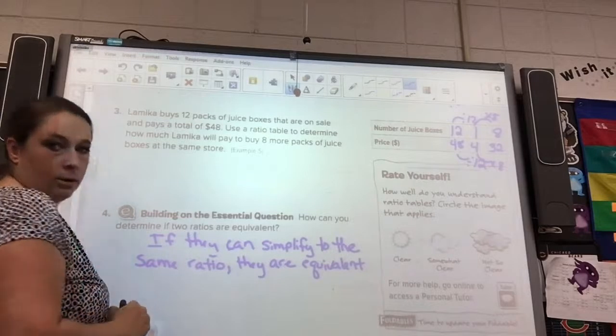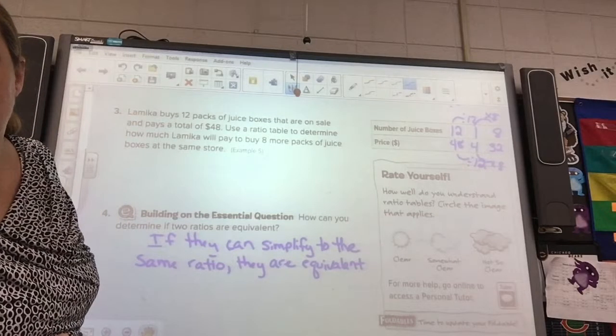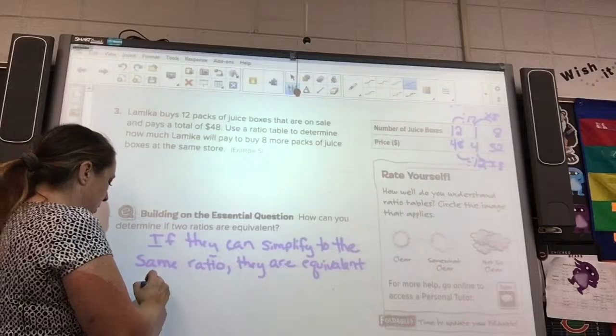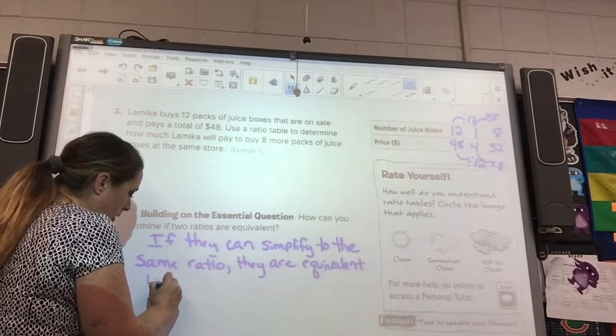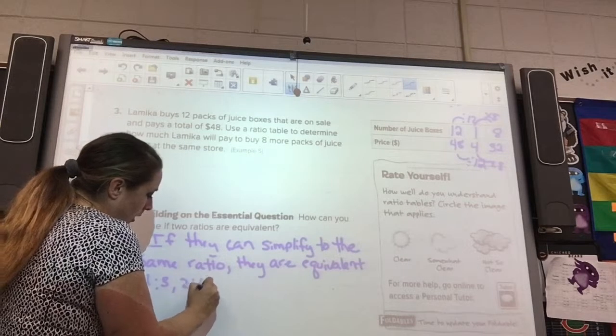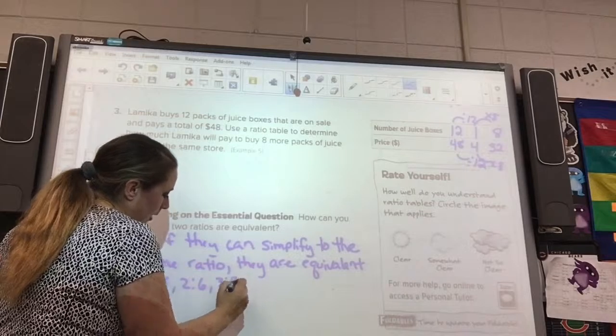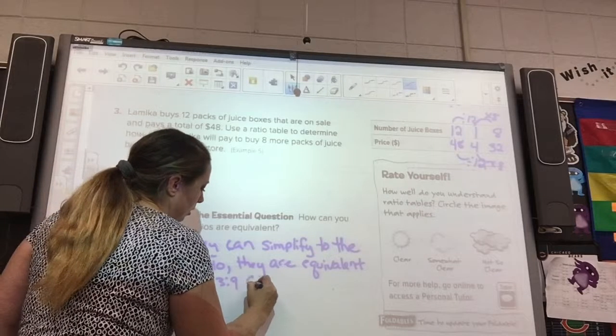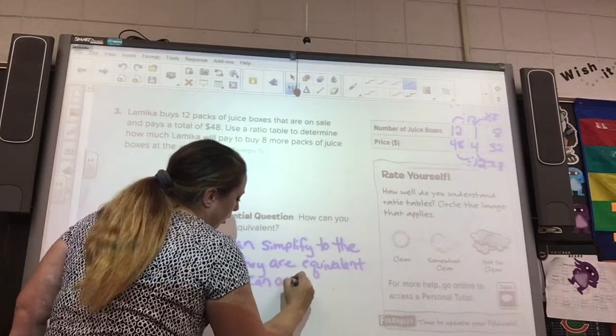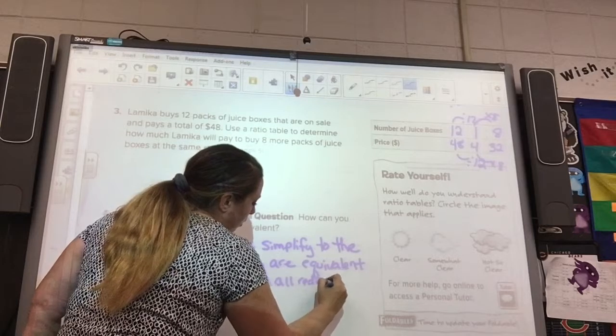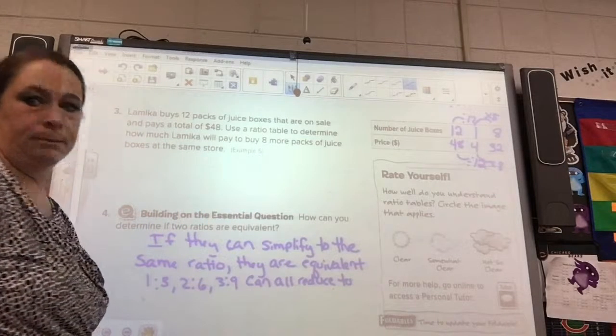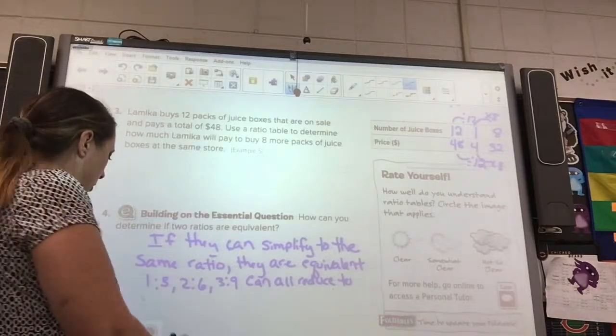So we have, what example they gave us, they gave us 1 third, 2 sixths, and 3 ninths. 1 third, 2 sixths, and 3 ninths can all reduce to what? 1 third.